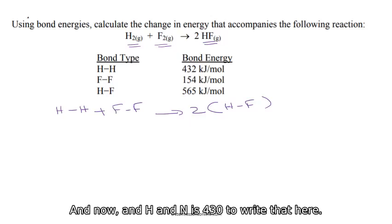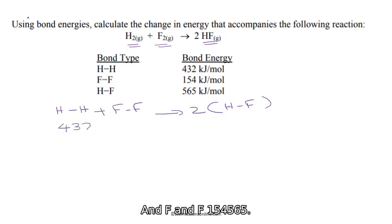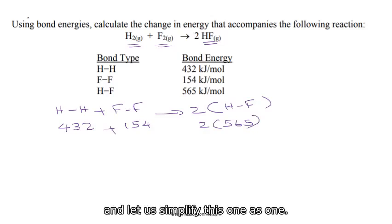And H-H is 432. I will write that here. And F-F is 154. And HF is 565. So 2 times 565. So we had to add this one and let us simplify this one as well. So this side, it's going to be 586. And when you multiply this one, 1130.